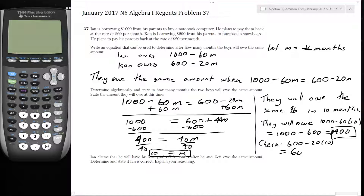And as a check using Ken's formula: $600 minus $20 times 10 equals $600 minus $200 equals $400. That checks out.